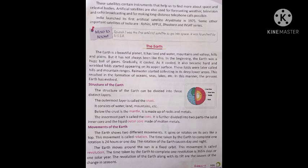Structure of the Earth: The structure of the earth can be divided into three distinct layers. The outermost layer is called the crust — it consists of water, land, mountains, etc. Below the crust is the mantle, which is made up of rocks and metals. The innermost part is called the core, which is further divided into two parts: the solid inner core, and the liquid outer core made of molten metals.